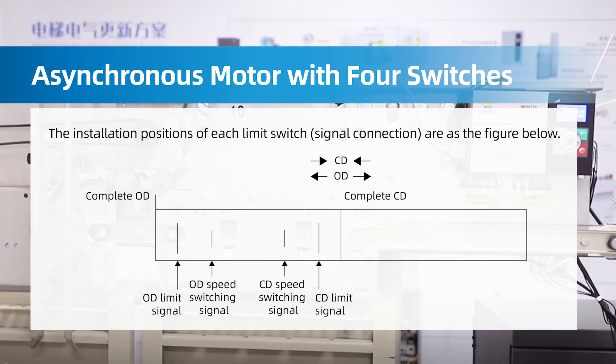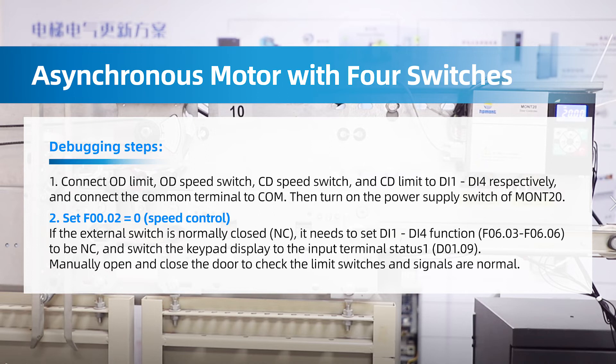Asynchronous motor with four switches: the installation positions of each limit switch and signal connections are as shown in the figure. Debugging step 1: Connect OD limit, OD speed switch, CD speed switch, and CD limit to D1 through D4 respectively, and connect the common terminal to COM. Then turn on the power supply switch of MONT 2.0.